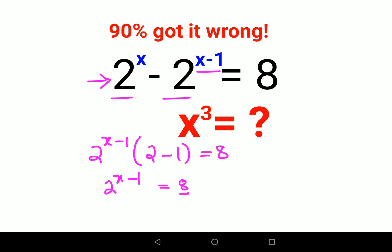Now if you look closely, this 8 can be written as 2 cube. Since the bases are the same, the indices can equate themselves, so x minus 1 equals 3, therefore x equals 4.